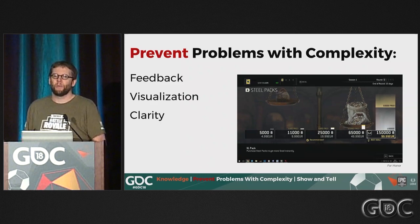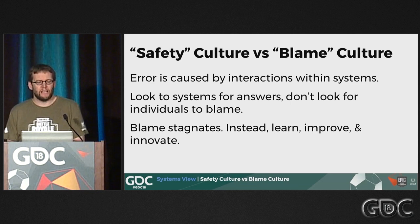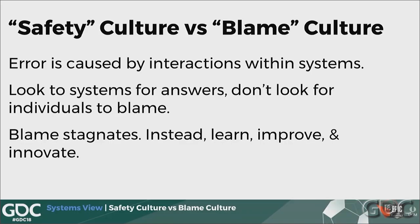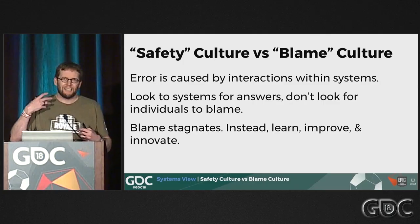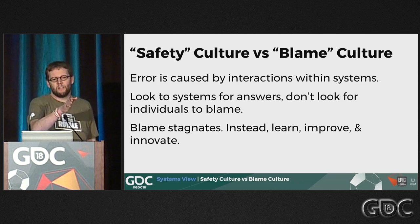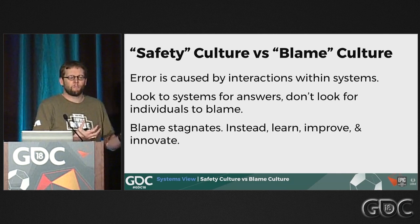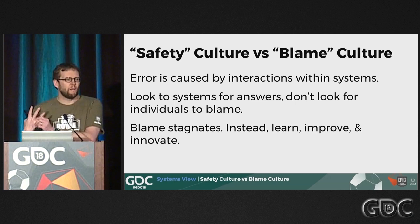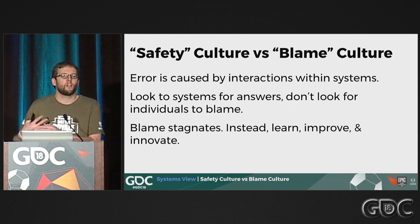To finish off, I'm going to talk about a systems view — a holistic way of dealing with error. At its heart, this is a safety culture view versus a blame culture. It's a recognition that errors are caused by system interactions. Errors arise out of complicated things, and we make the natural mistake of thinking errors happen because someone did this, then this, then that — but that's not how errors happen. Rather than looking to one person or cause and blaming that, you look to the system to see what caused it to occur.